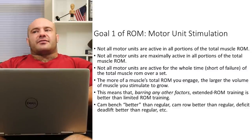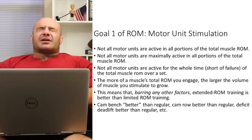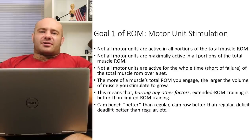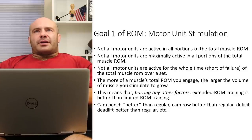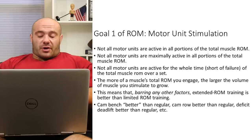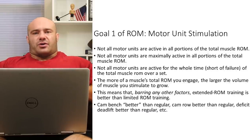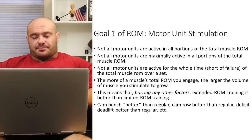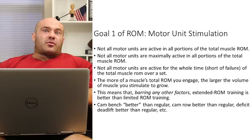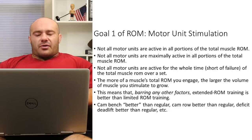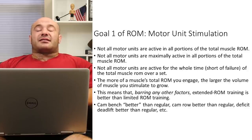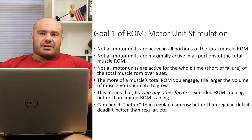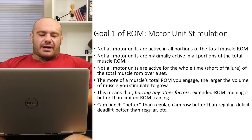So goal number one: more range of motion is better for at least this reason. If you're given a choice between exercises, the one with more range of motion probably grows more muscle. For example, a camber bar bench where you can go deeper is probably better than a regular bench where the bar stops at your chest. A deficit deadlift is hypothetically better for hypertrophy than a regular deadlift for people flexible enough to do it.